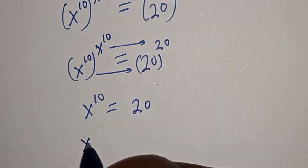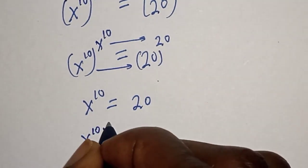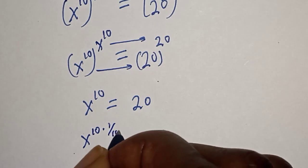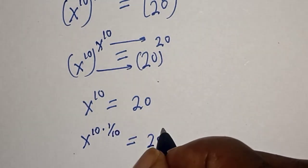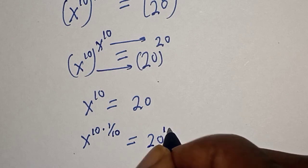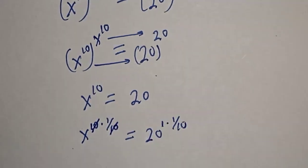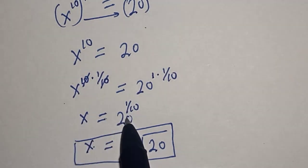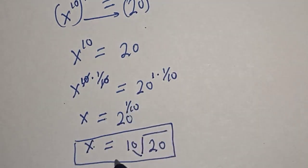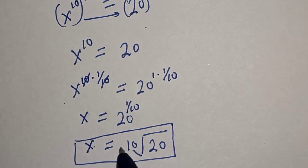Taking s raised to power 10 and multiplying both sides by 1 over 10 gives us s equals 20 raised to power 1 over 10, or equivalently s equals the 10th root of 20.